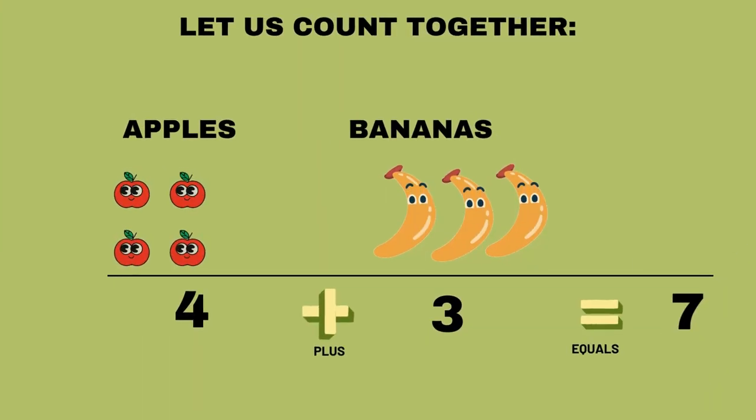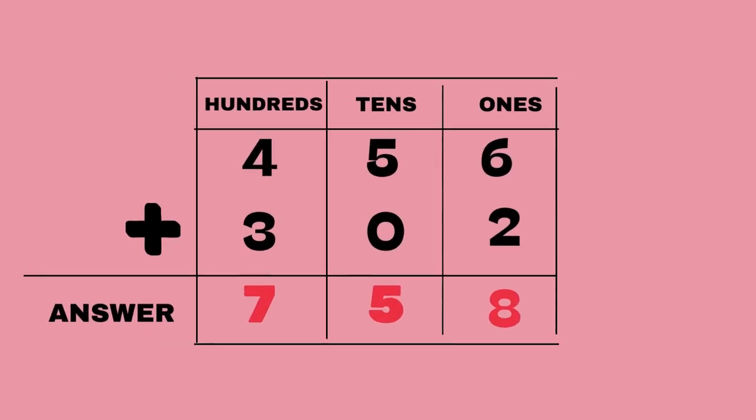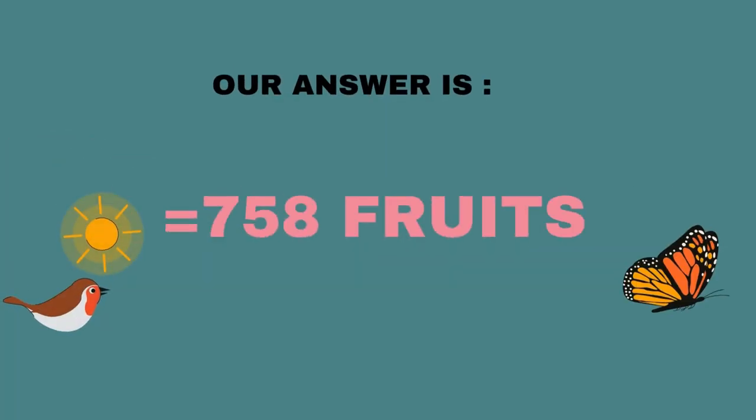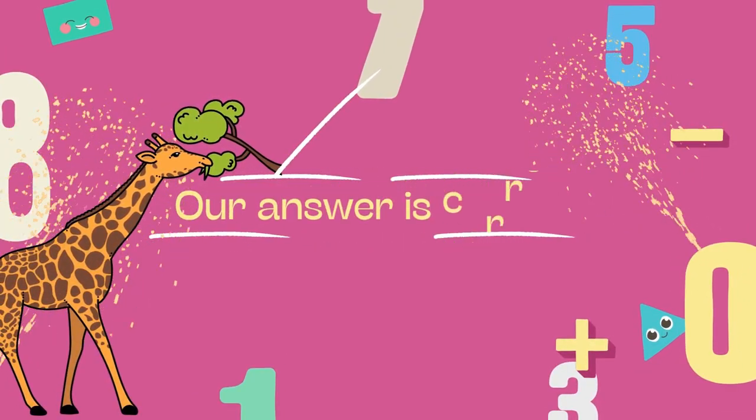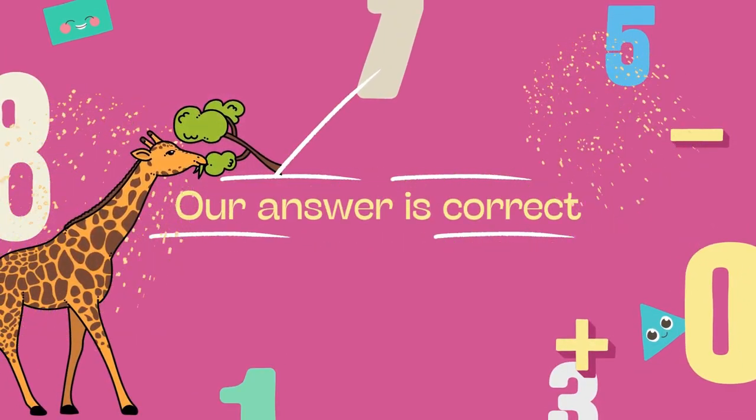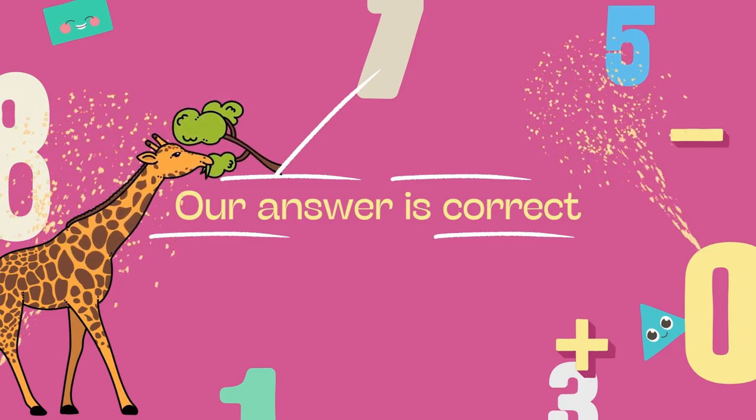So our answer is 758. That's the answer! We did it. We added 456 apples to 302 bananas to get 758 fruits.